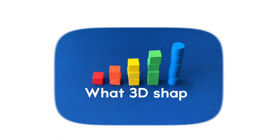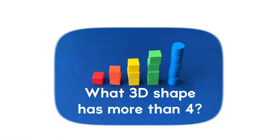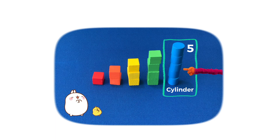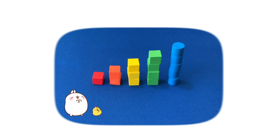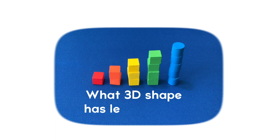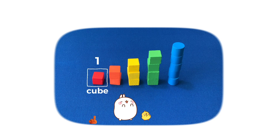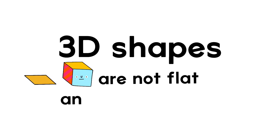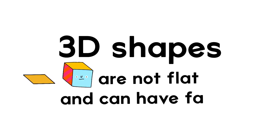What 3D shape has more than four? It's the cylinder. What 3D shape has less than two? It's the cube. 3D shapes are not flat and can have faces.